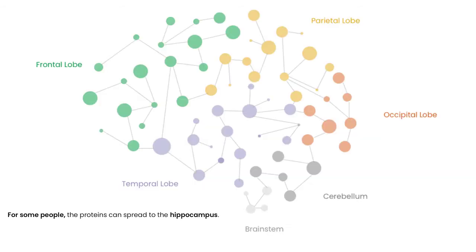For some people, the proteins can spread to the hippocampus. Proteins in the hippocampus can cause difficulty with memory.